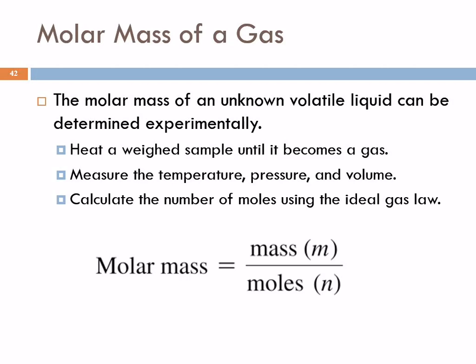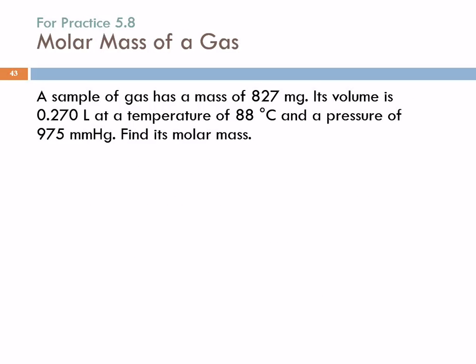We can also, by measuring a gas, find out the molar mass of an unknown gas. If you have an unknown volatile liquid or gas, take a weighed sample, heat it until it becomes a gas, and measure the temperature, pressure, and volume — you can calculate the number of moles present. Since you know the mass and can calculate moles, you can find the molar mass. Problem: a sample of gas has a mass of 827 milligrams, a volume of 0.270 liters, at 88°C and 975 mmHg. Find its molar mass.